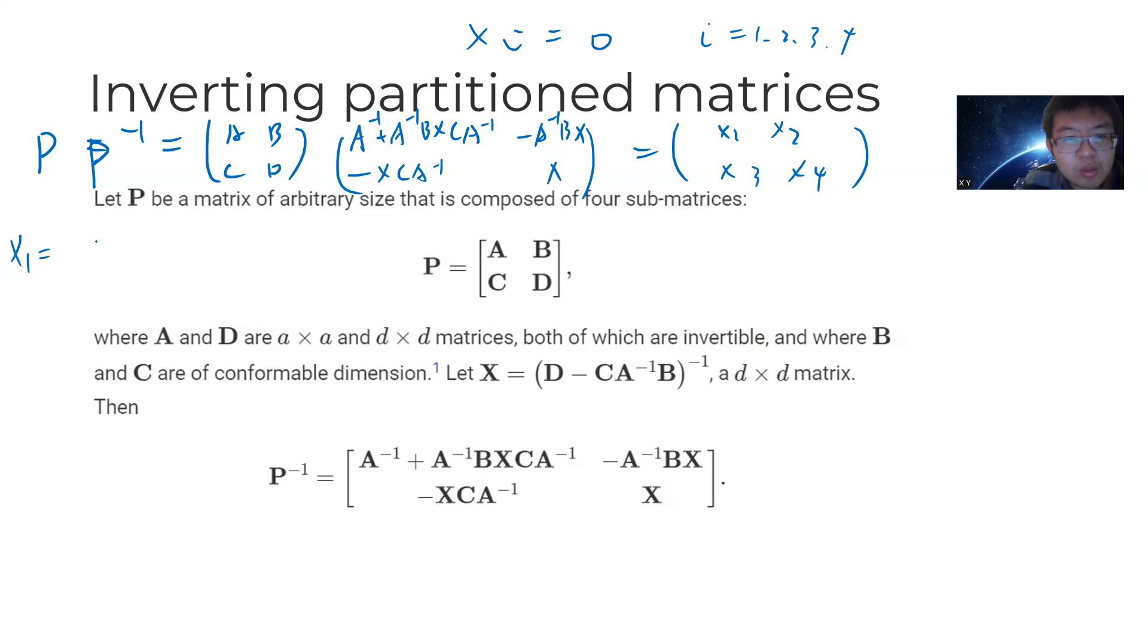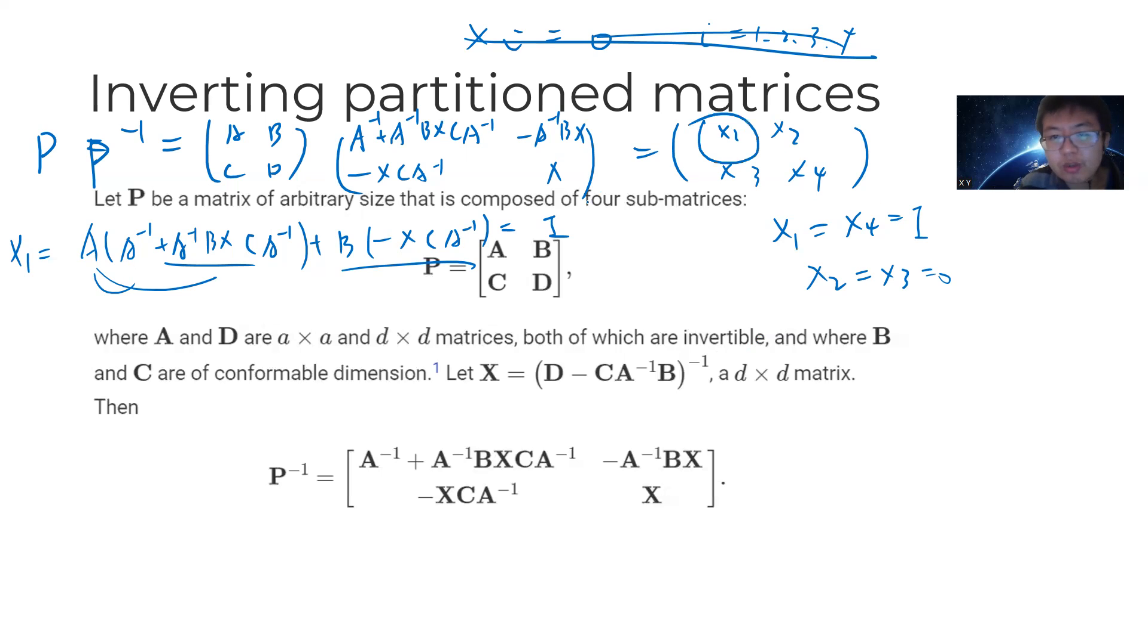So X1 will be A times A inverse plus A inverse B X times C A inverse plus B minus X times C A inverse. Obviously this is the identity. This is the same. So X1 is identity because the A identity and this term cancels with this term.